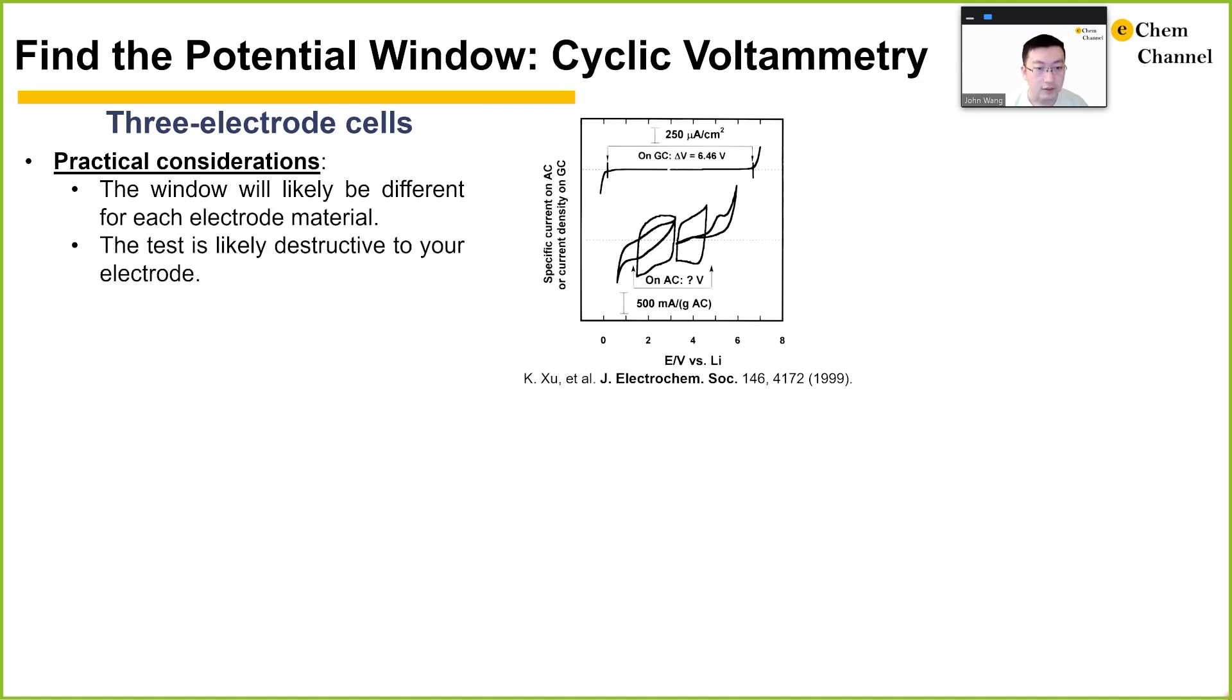Second, the potential window exploration experiment is likely destructive to your electrode. In the same figure, you see that when the electrolyte broke down and formed a film on the electrode, it blocked a significant portion of micropores of the activated carbon electrode, reducing the current density. This process is irreversible, so prepare to sacrifice electrodes for such tests. If you are using a very small amount of electrolyte, consider replacing it too.